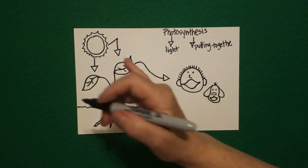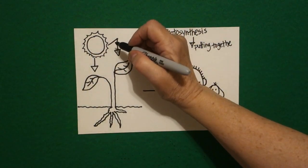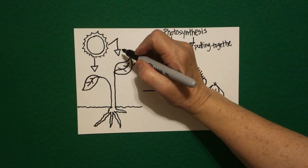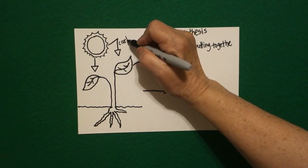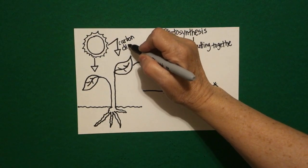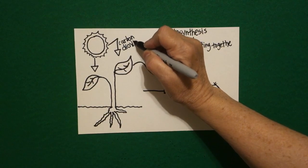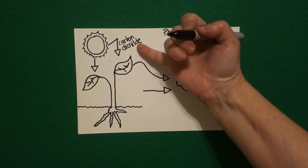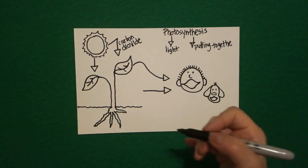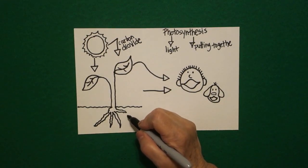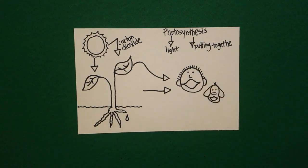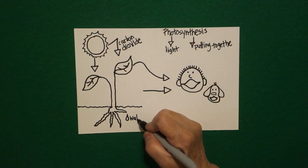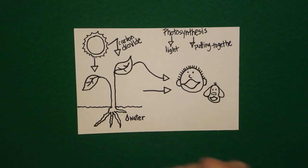Now we're ready to label. This is the sun, and the sun makes carbon dioxide, which is a gas. When we talk about photosynthesis, plants use energy in the sunlight to turn a gas called carbon dioxide and water into sugar. We come all the way down to the bottom and draw a curve line up — this is the water. This is what the plants get through their roots.